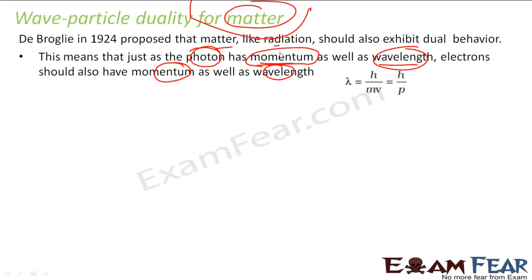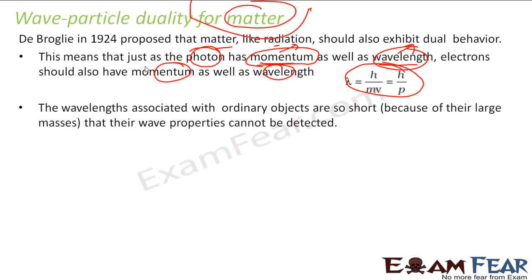Why momentum? Because of the particle nature, and why wavelength? Because of the wave nature. So an electron will also have momentum as well as wavelength. The wavelength will be λ = h/mv = h/p. This is the relation. The wavelength associated with ordinary objects is very short, and that is why their wave property is not detected.